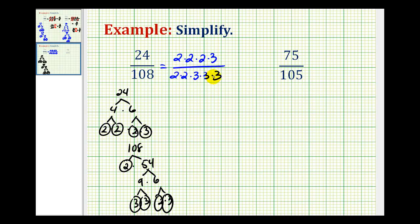And now once we have the prime factorization, it's much easier to identify the common factors between the numerator and denominator. Here we have a two over two, that simplifies to one. Two over two, that simplifies to one. And we also have a three over three, which simplifies to one.